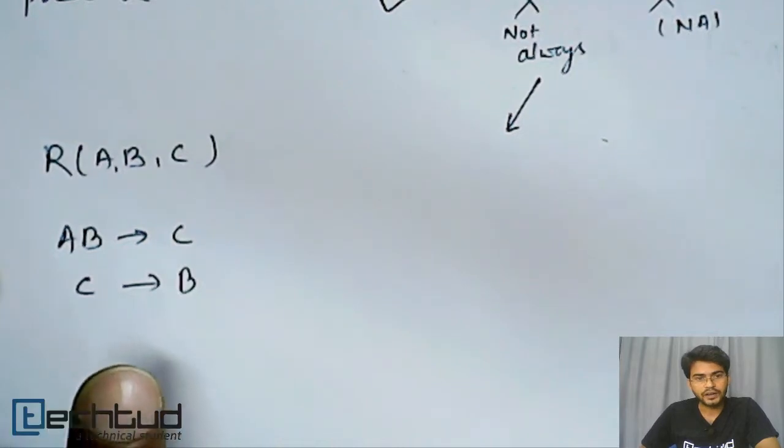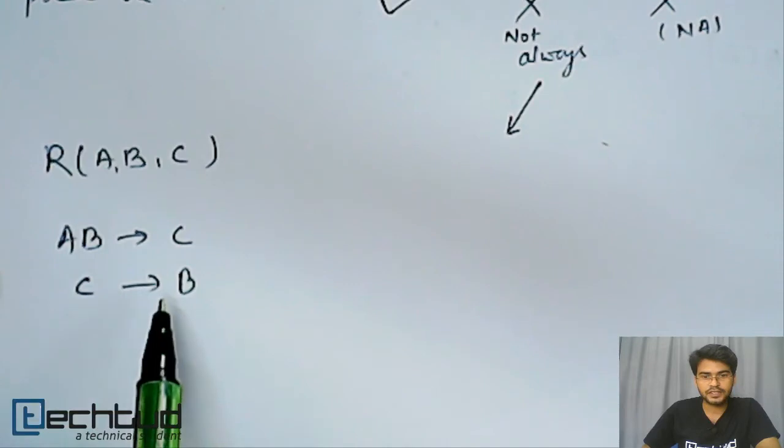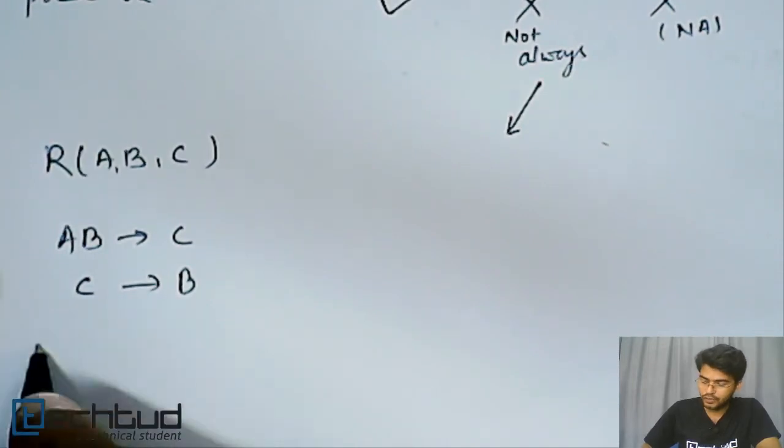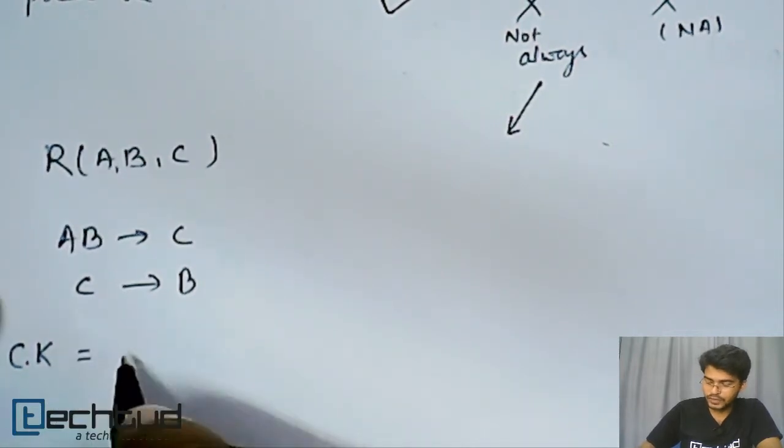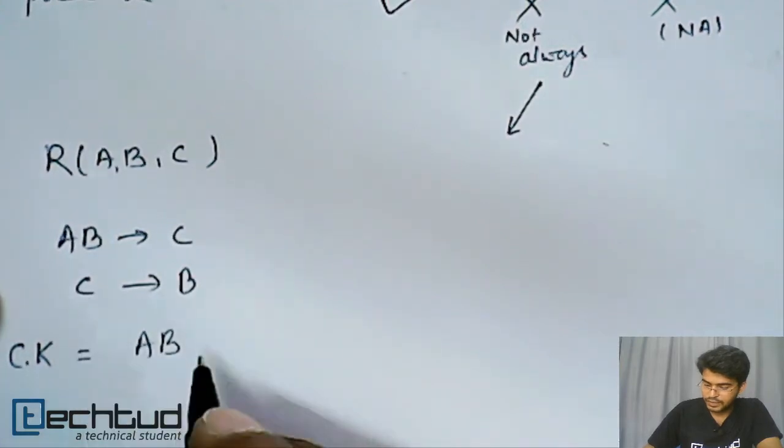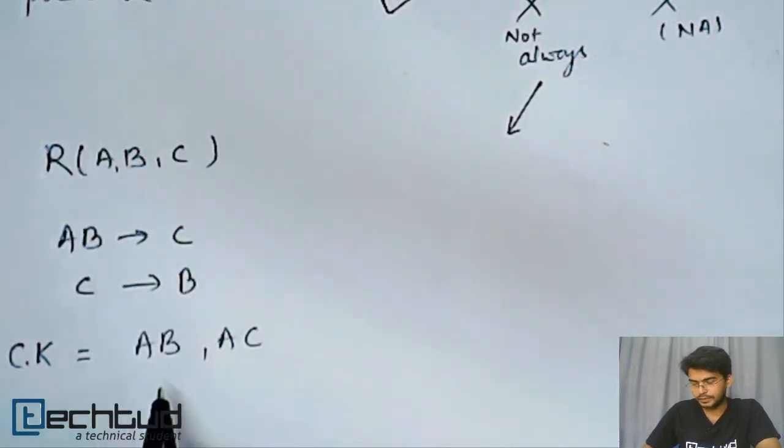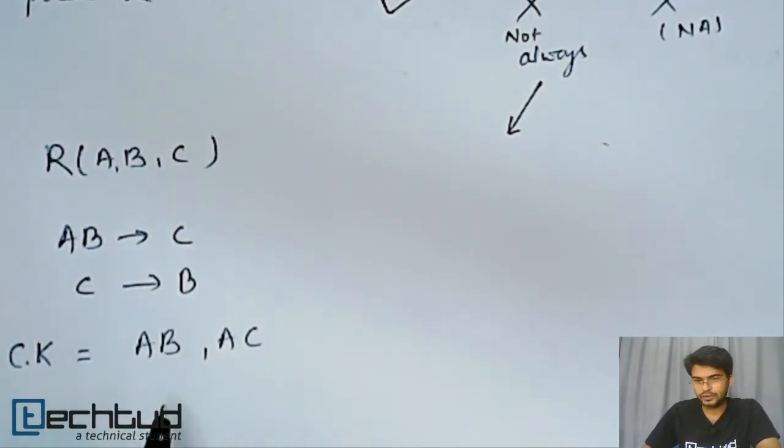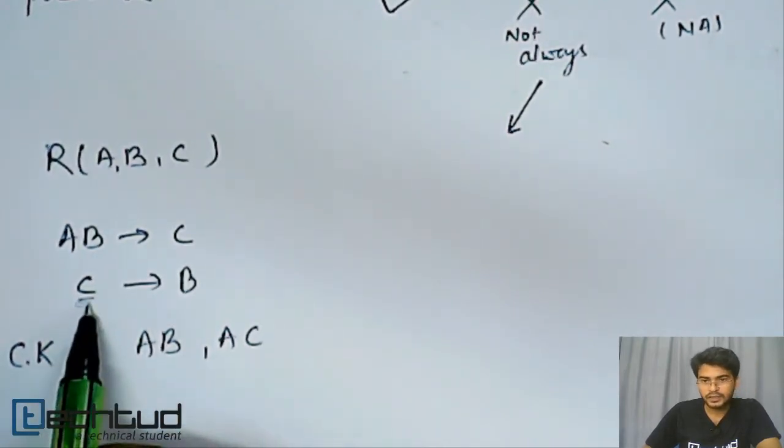Now we will see an example of why BCNF cannot preserve functional dependency. Let's take a relation R of A, B, C where we have two functional dependencies: AB determines C, and C determines B. Now the candidate key for this relation will be AB, and as B can be determined from C, so AC. All are prime attributes here. There is no non-prime attribute. Now up to third NF it will satisfy, but BCNF - let's check.